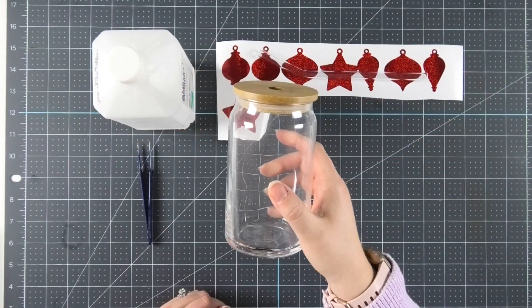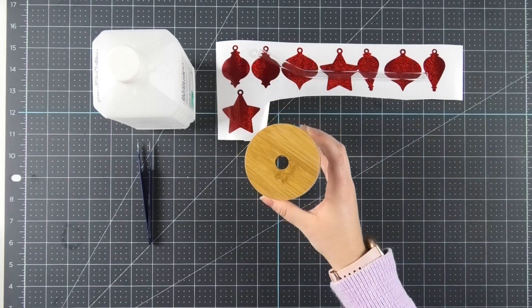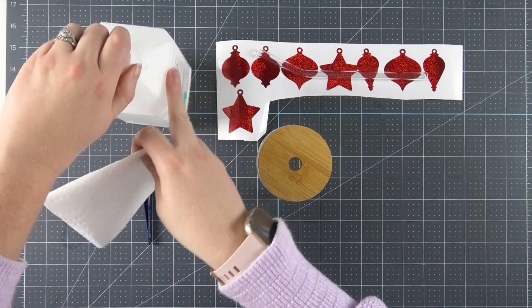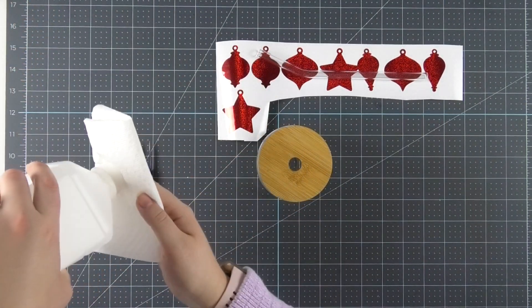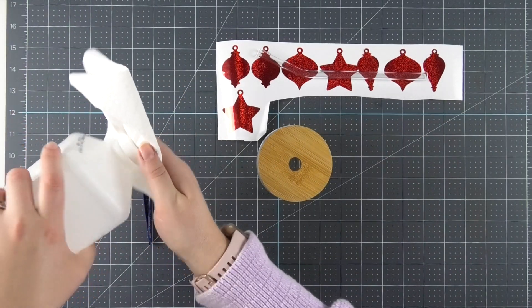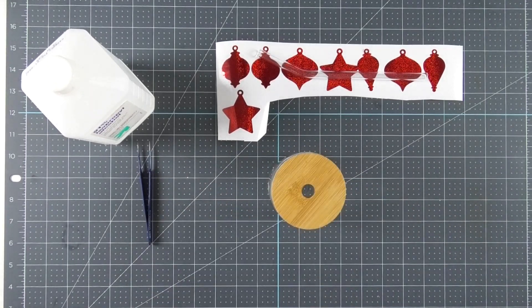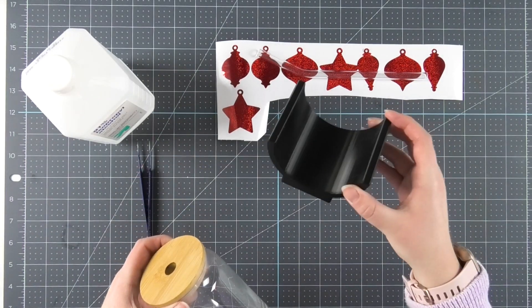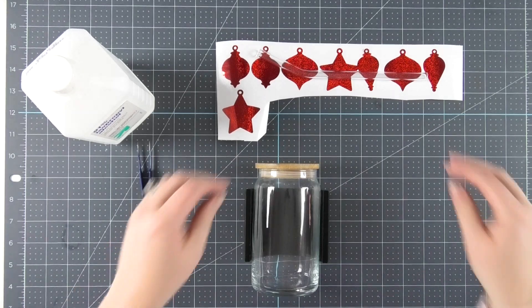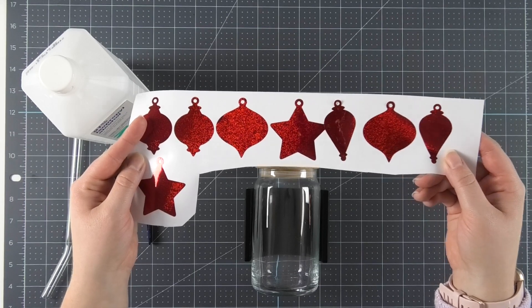Last minute gift idea number two is going to be a Libby glass can with some vinyl around the outside. So to get started, I'm going to take a paper towel and put some rubbing alcohol on it and wipe the glass down to make sure that it's free of dirt, fingerprints, and all of that good stuff. Then I'll set it aside for just a second to dry. Next, I'm going to put it in my vinyl cup keeper to hold the cup still while I'm applying all of my vinyl ornaments.